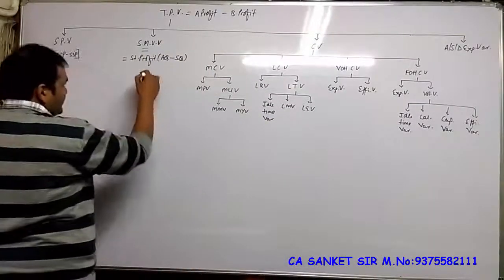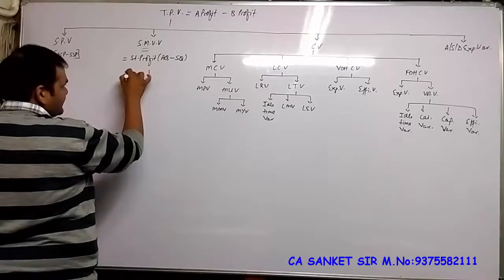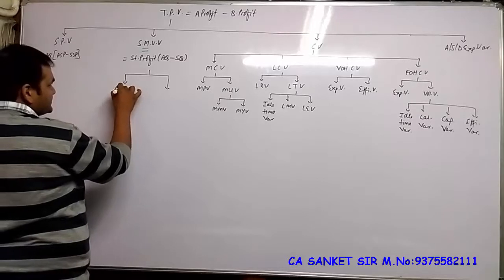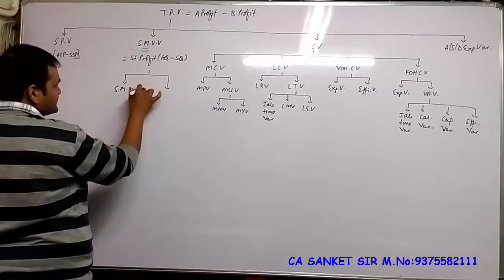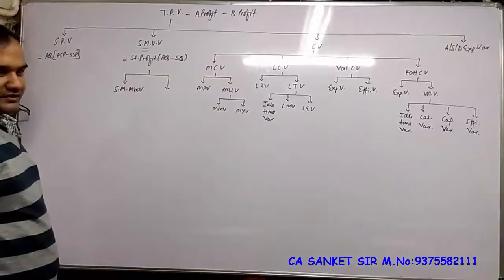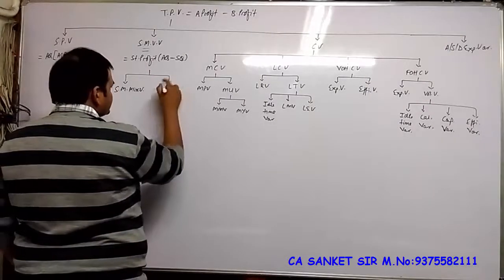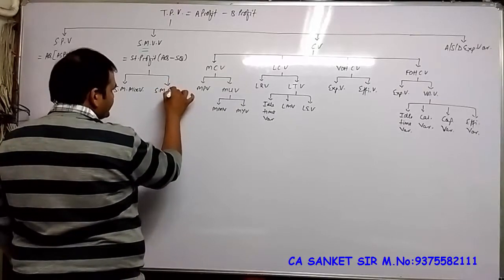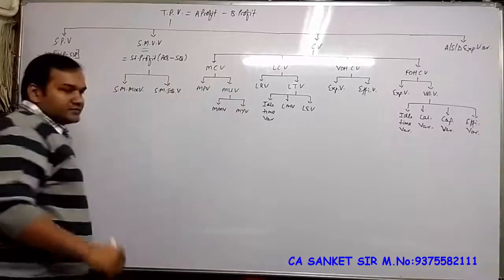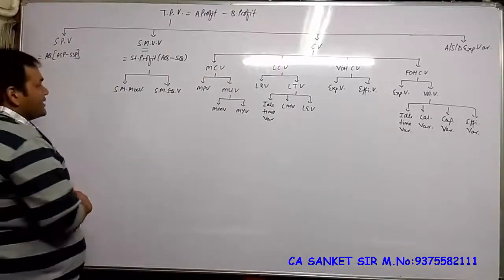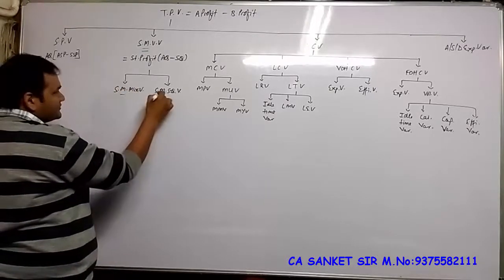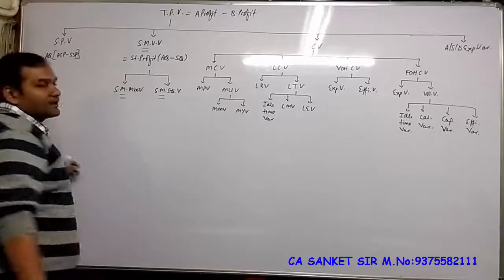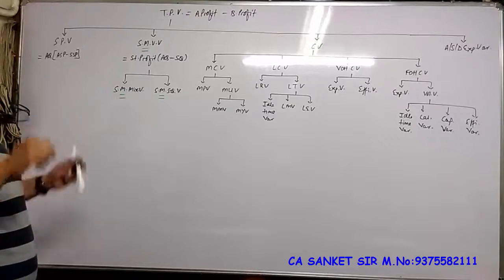Now for Profit Variance Volume Variance, the sub-parts studied are: Sales Margin Mix Variance and Sales Margin Sub-Quantity Variance. The key word here is 'Margin' — and Margin means Profit. So wherever 'Margin' appears in the name, it refers to Profit.